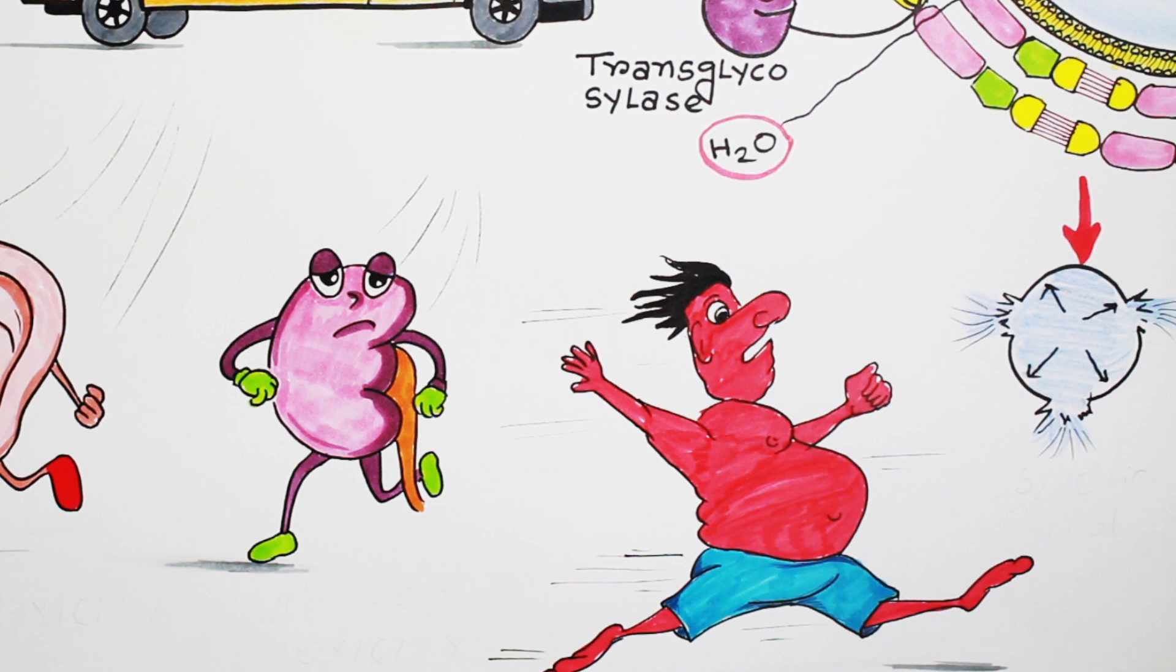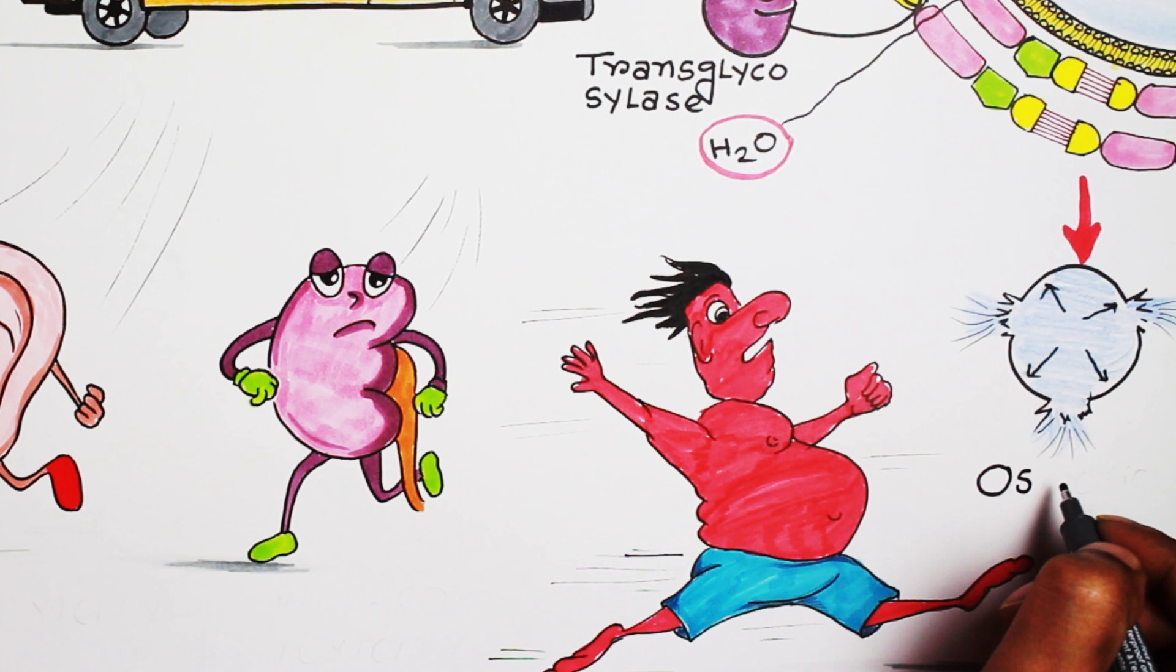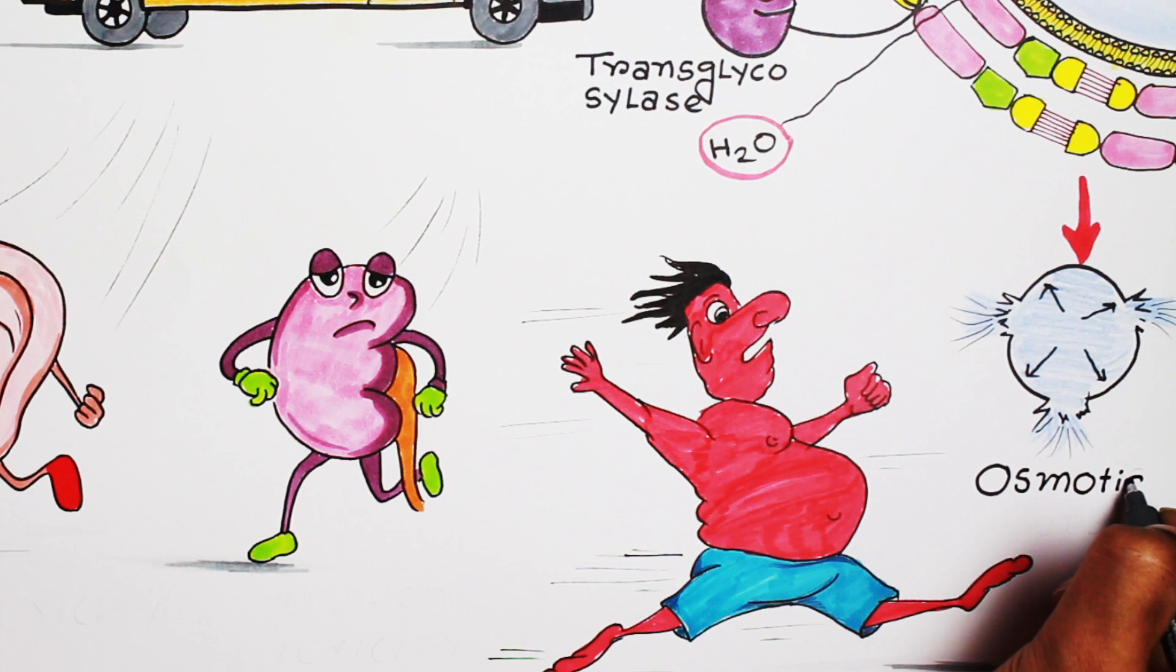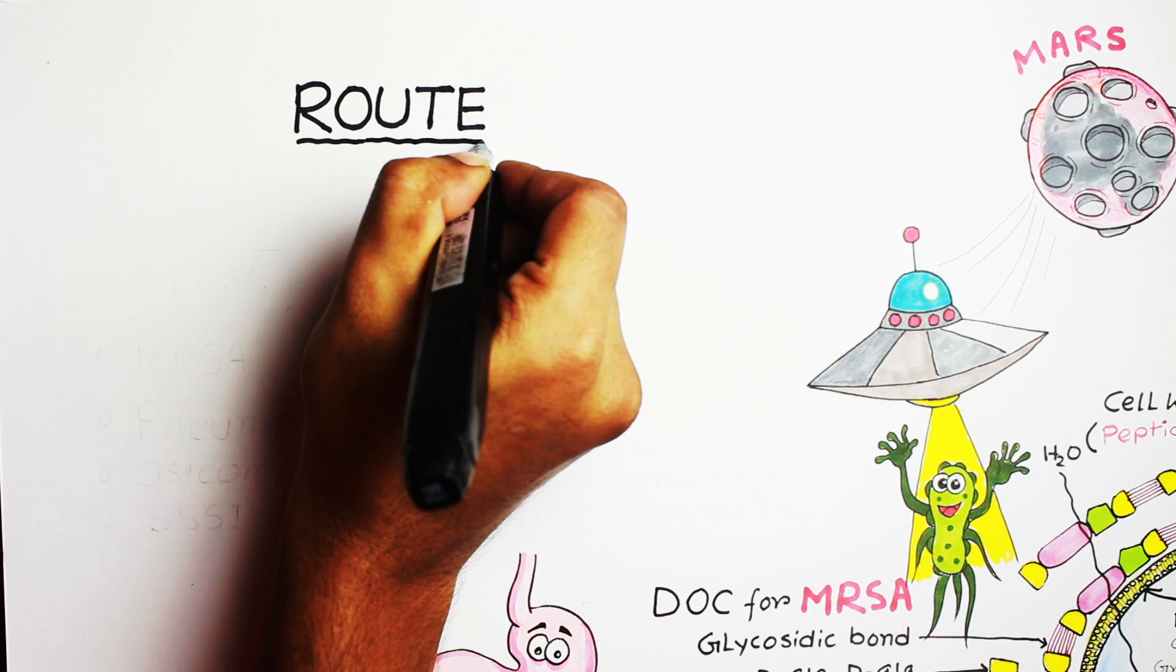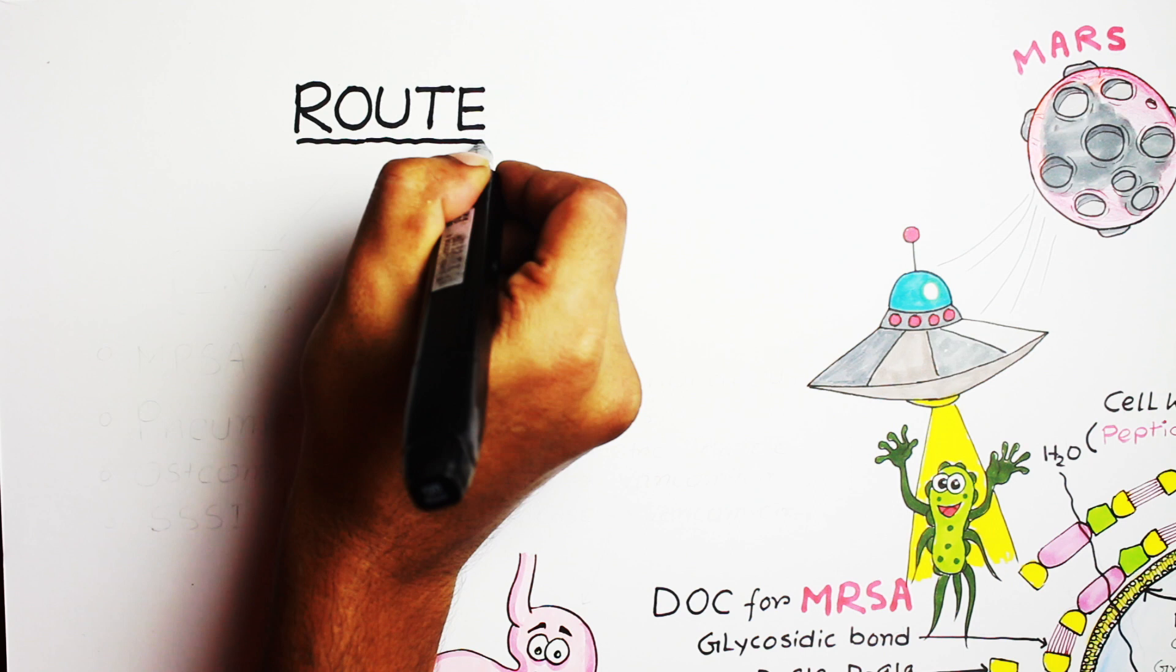Now if the cell wall gets damaged, the increasing osmotic pressure eventually can lead to osmotic burst of the bacterial cell and the bacteria will die. That is how vancomycin kills the bacteria. So vancomycin is a bactericidal antibiotic because it kills the bacteria.